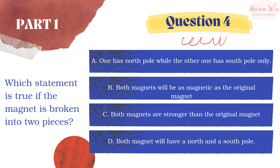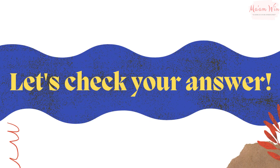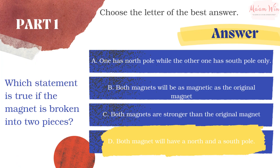Question number four: which statement is true if the magnet is broken into two pieces? Letter A: one has a north pole while the other has a south pole only. Letter B: both magnets will be as magnetic as the original magnet. Letter C: both magnets are stronger than the original magnet. Letter D: both magnets will have a north and a south pole. Let's check — the right answer is letter D: both magnets will have a north and a south pole.